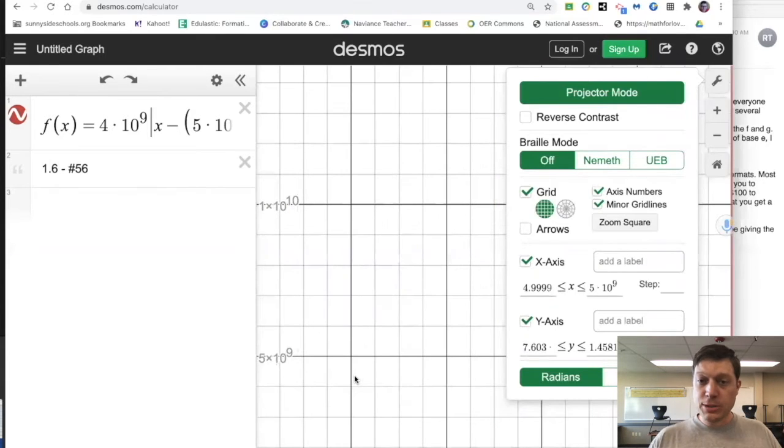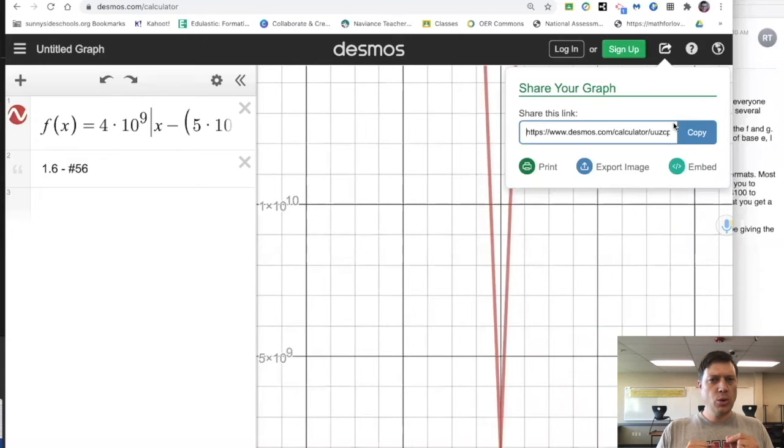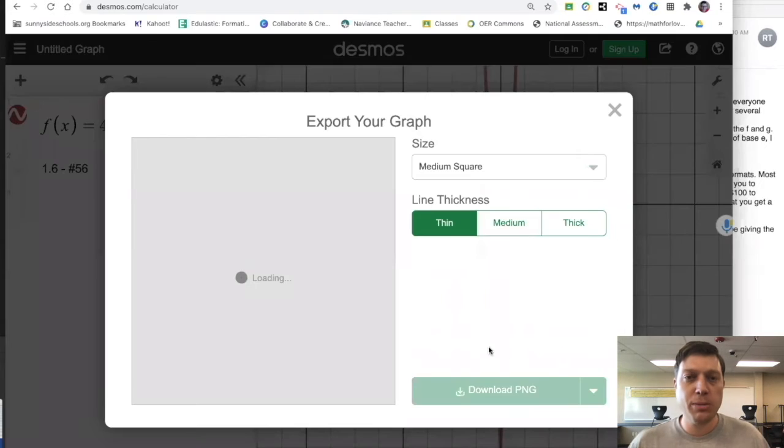It's definitely a V absolute value function. But the question is, can you trick it? Can you make it represent the graph in a way that makes meaning?